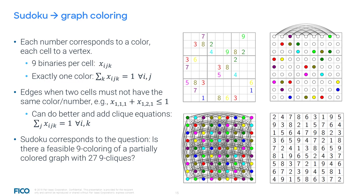To formulate the other rules, we convert the Sudoku into a graph, inserting an edge between any pair of cells that must not have the same color. For each pair of adjacent cells and each color, we introduce a constraint that the sum of the corresponding variables has to be less than or equal to 1. Using our knowledge that Sudoku is more specific than graph coloring, we can do better by adding clique equations. For row i and color k, we add the constraint that the sum of variables over the columns equals 1, since each color must be used exactly once in the clique. Solving a Sudoku puzzle is therefore equivalent to asking whether there is a feasible 9-coloring of a partially colored graph with 27 nine-cliques.